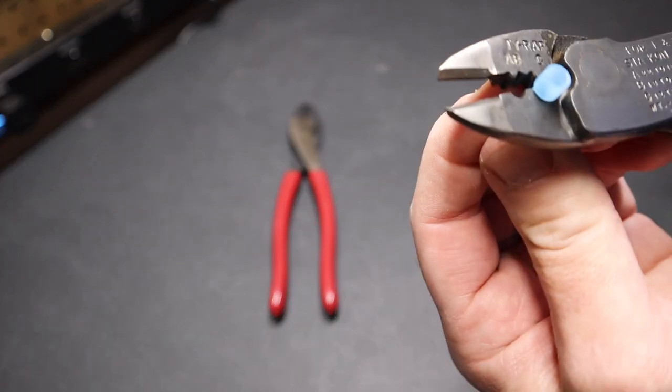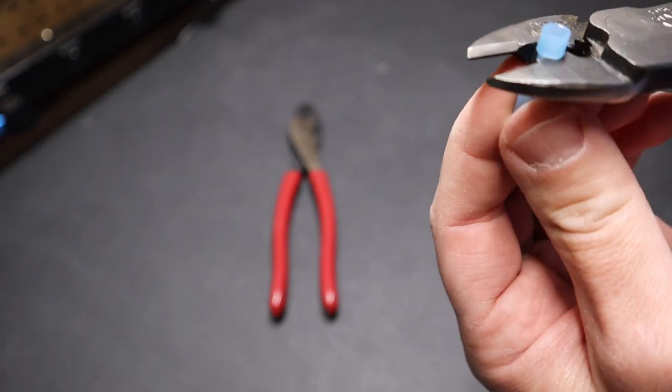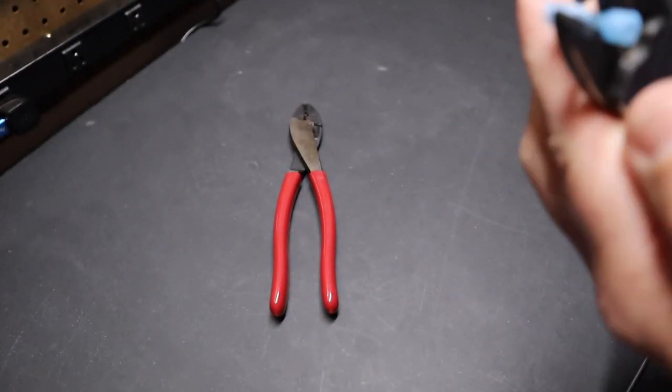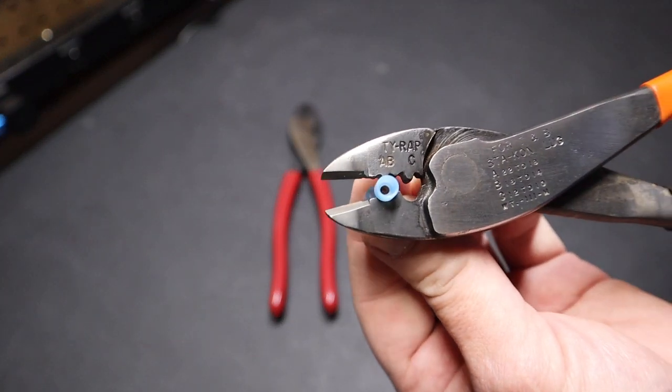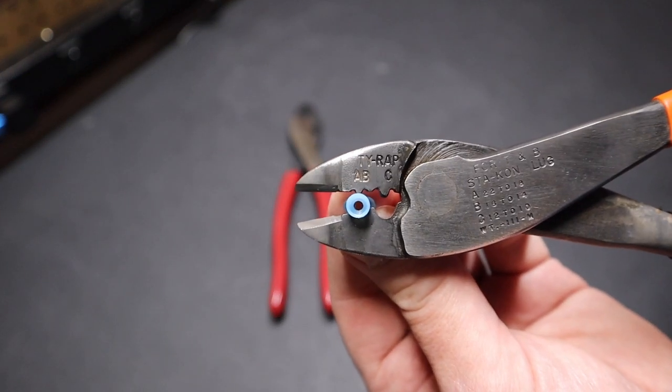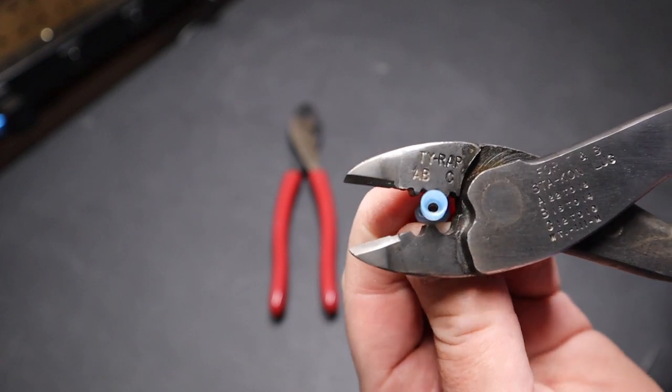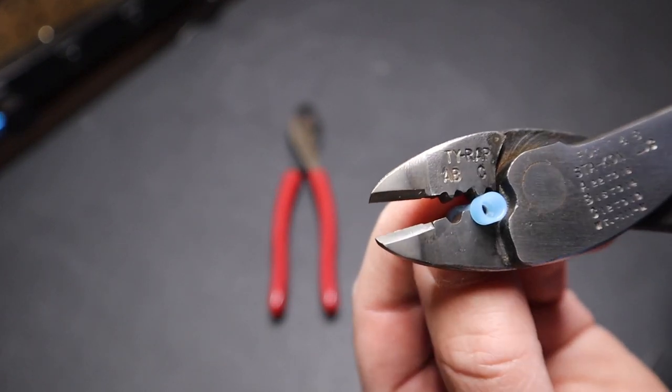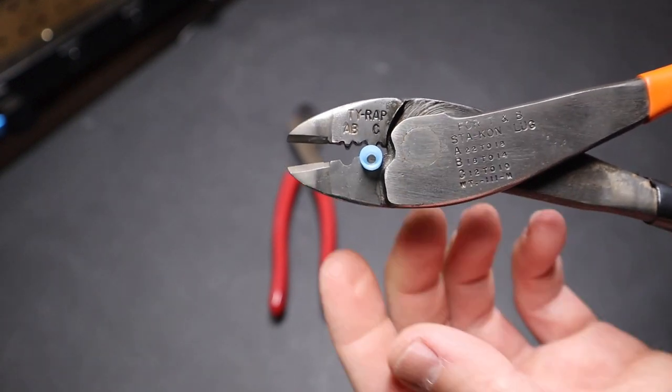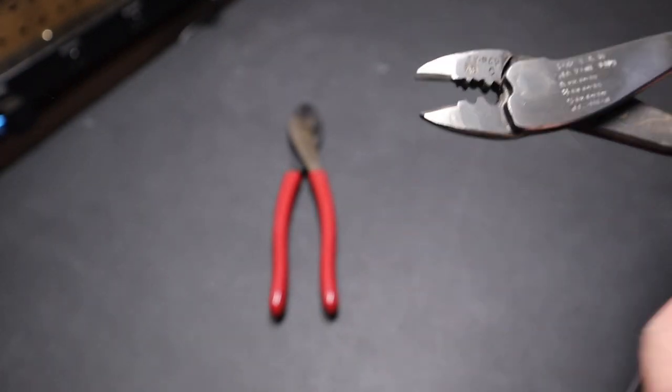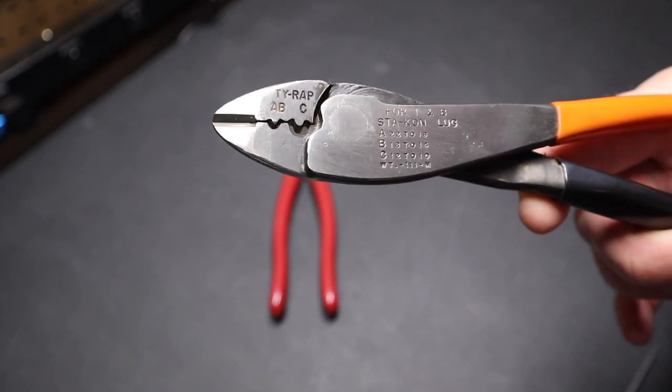That's another thing I like about this crimper though, is if you're doing insulated, because I think this will probably fit fine in the smaller one. You know, you have your choice really. I think it would work fine here in the smaller part of the die, but you could also choose to use the larger part since you have insulation on there. But that in a nutshell is how you would crimp those style connectors.